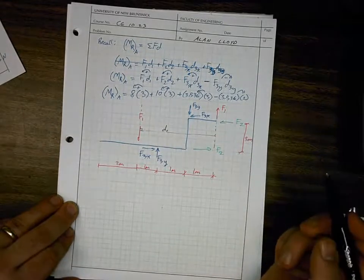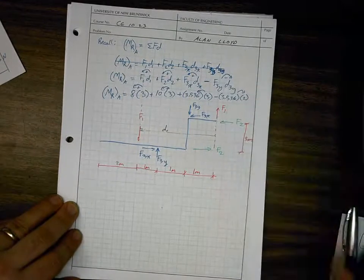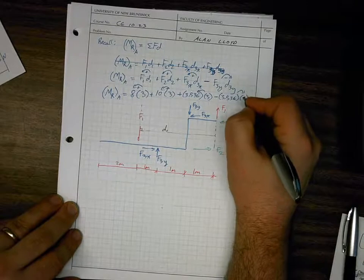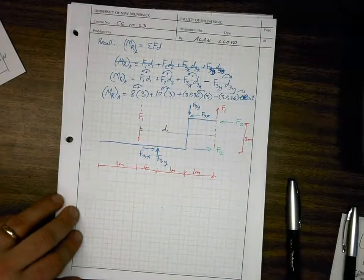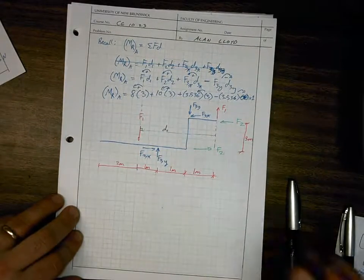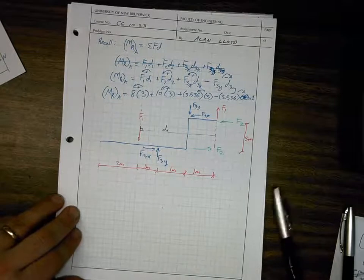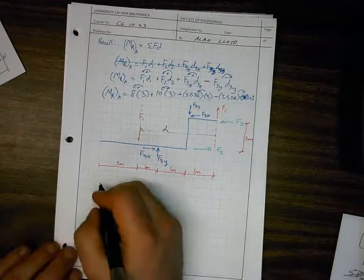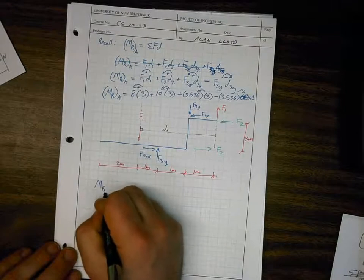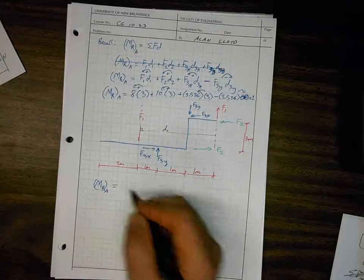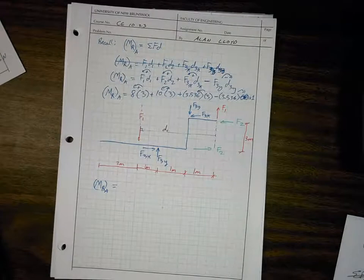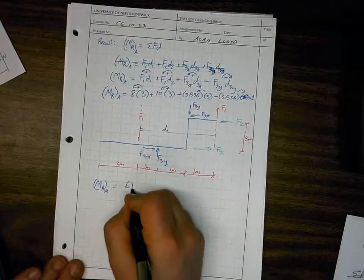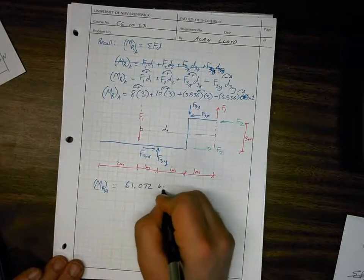The separation for f3y — actually, correcting this — is 1 meter. So d3y equals 1 m. Adding up the moment resultant: M_rA equals 8×3 + 10×3 + 3.536×3 − 3.536×1, which equals 61.072 kN·m.